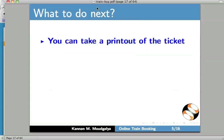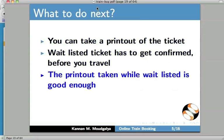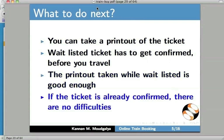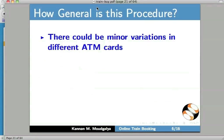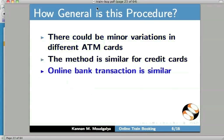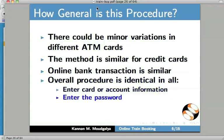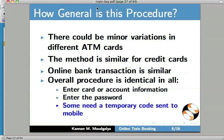I have come back to the slides. What to do next? You can take a printout of the ticket. A wait-listed ticket has to get confirmed before you travel; the printout taken while wait-listed is good enough — you don't have to print it again. If the ticket is already confirmed, there are no difficulties. How general is the procedure shown in this tutorial? There could be minor variations in different ATM cards. The method is similar for credit cards, and online bank transaction is similar, but the overall procedure is identical: enter card or account information, enter the password. Some need a temporary code sent to your mobile phone.